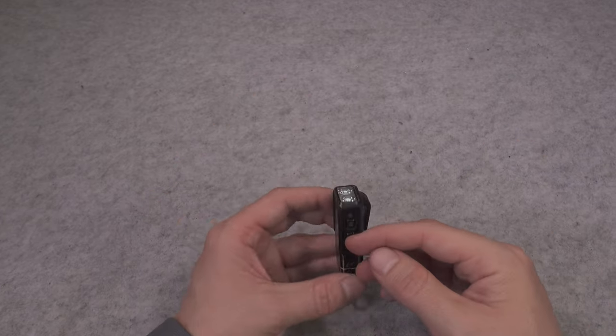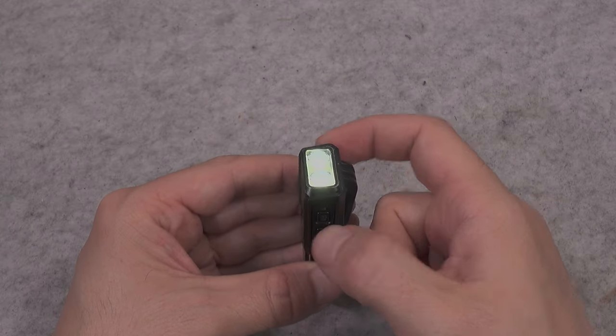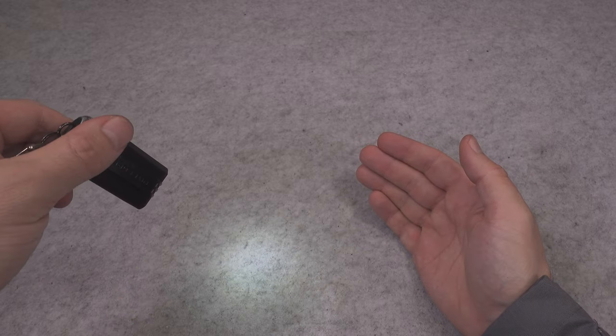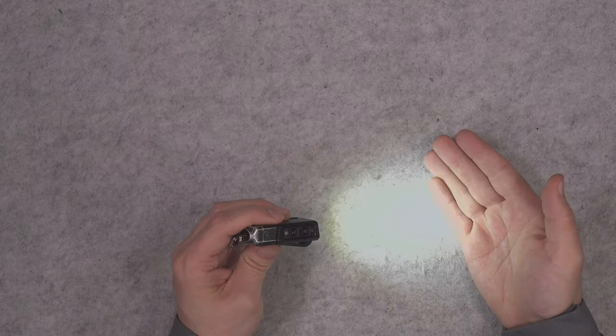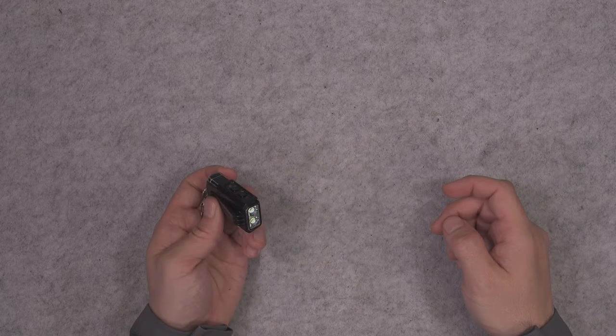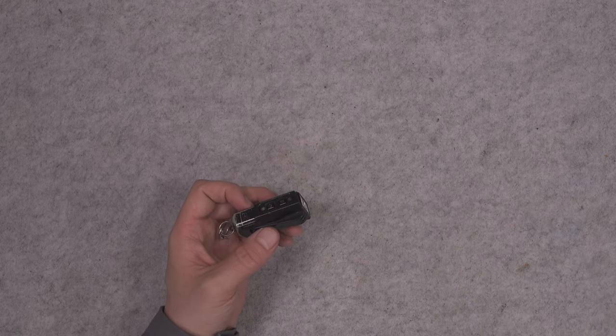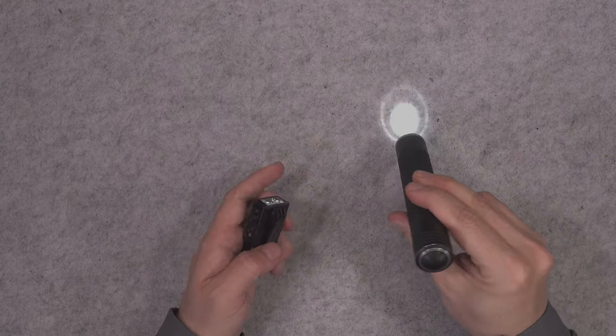From that mode we can use the top button to cycle through different amounts of light. This is medium, and this is our high. We go back to the low power. Let me compare the medium power to the military light.